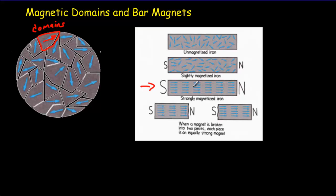Notice that if you have a bar magnet, you always have a south pole and a north pole. We say there are no isolated magnetic poles — you can never just get a north pole. It's not like charge where you can get a positive or negative charge. Every south pole comes with a north pole, and every north pole comes with a south pole. Even if you break your magnet in half, you'll still get two tiny little magnets. You could continue to do this and produce more and more little magnets.